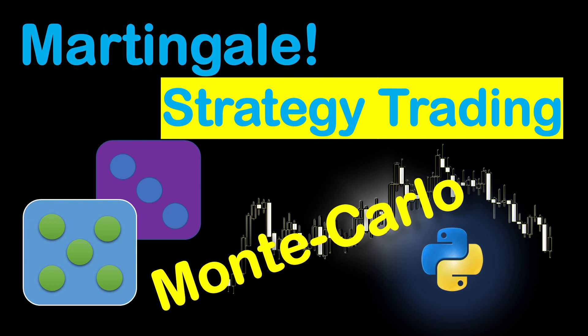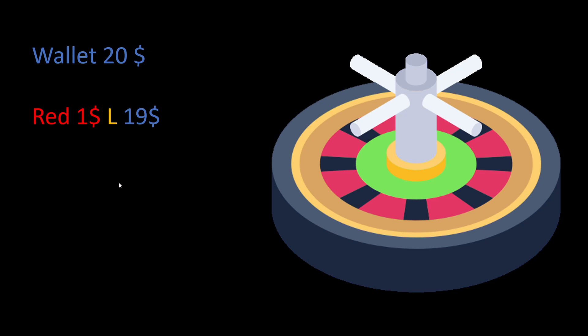Imagine we enter a casino with $20 and decide to play roulette, bidding only on colors — either red or black — for $1 each time. We bid $1 on red and lose, leaving us with $19. Then we double our bet to $2 on red for the second bet, and again we lose, leaving us with $17.